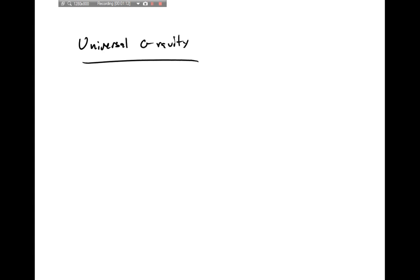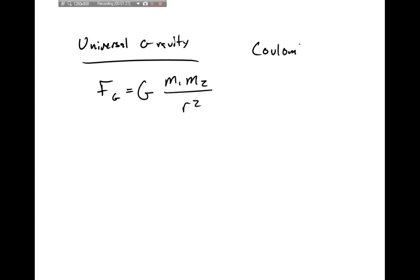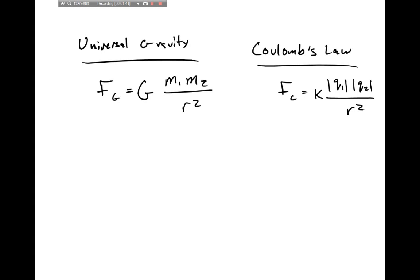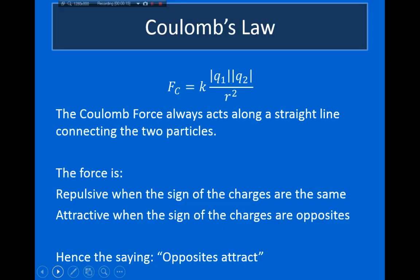Coulomb's Law is very similar to the formula for gravitational force between two distant objects — the gravitational force equals a constant times the mass of one object times the mass of the other, divided by the square of the distance. The only real change is that instead of the force being proportional to masses, it's now proportional to charges. And just like gravity, the Coulomb force always acts along the straight line connecting the two particles.